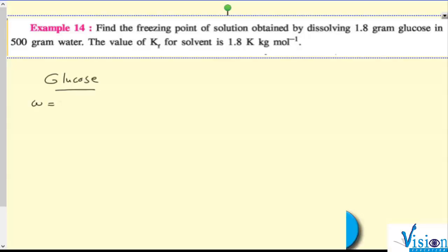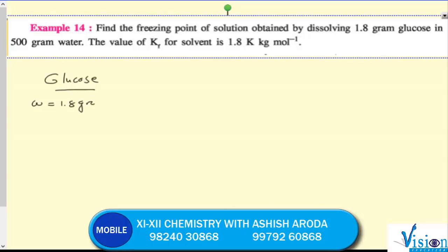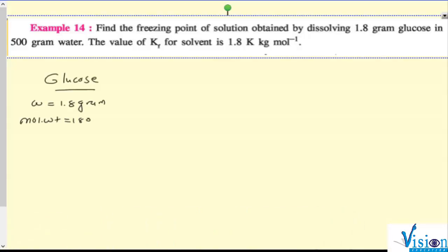Glucose weight is 1.8 gram. Obviously we know molecular weight of glucose is 180 gram per mole. Weight of solvent W₀ is 500 gram. Kf has been given to us, Kf equals 1.8 Kelvin kilogram mole inverse. Correct or not?